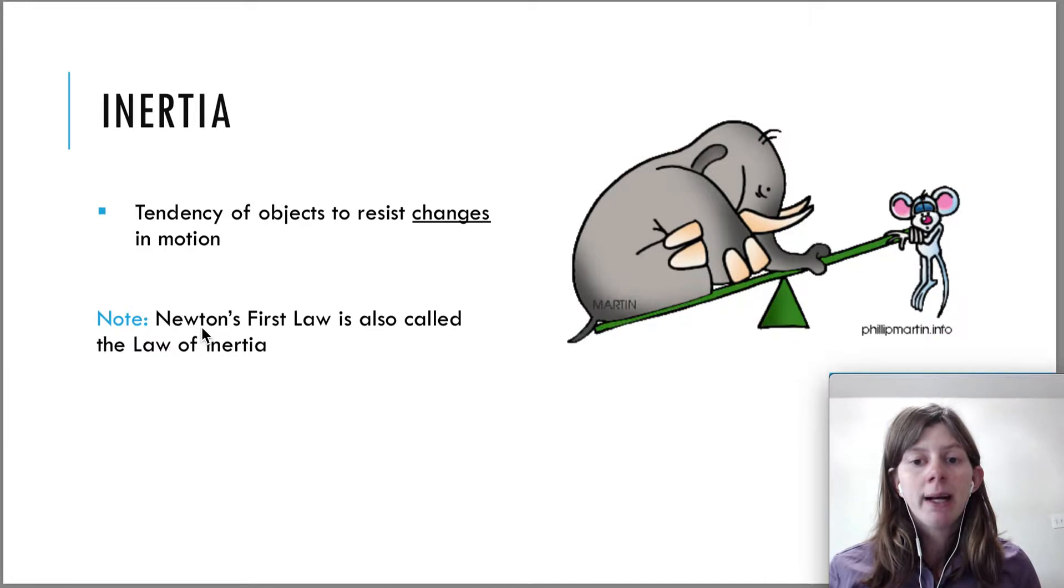Newton's first law is actually also called the law of inertia, because what I just said is really just restating Newton's first law. So I have a picture here of an elephant and a mouse. The elephant has a lot of inertia because it's hard to get it moving, while the mouse has very little inertia. It's very easy. You can just flick the mouse and it will go.